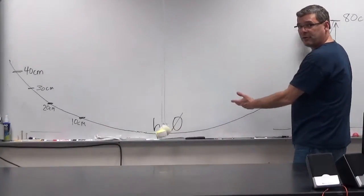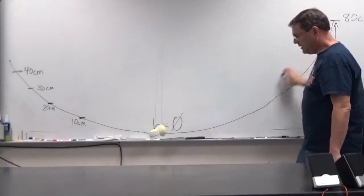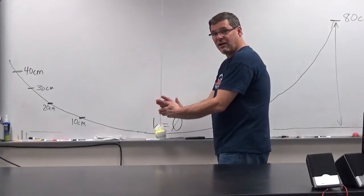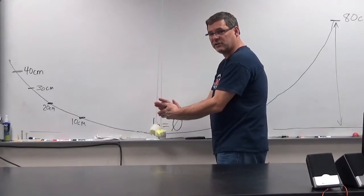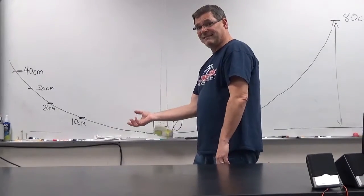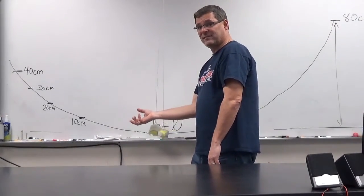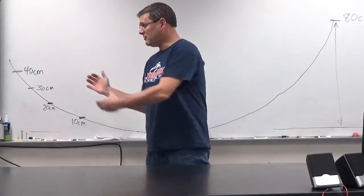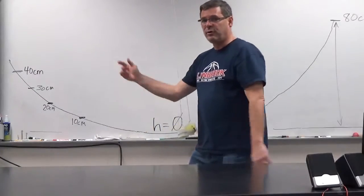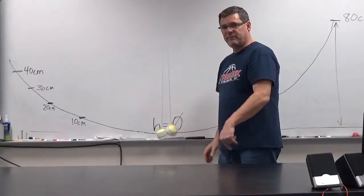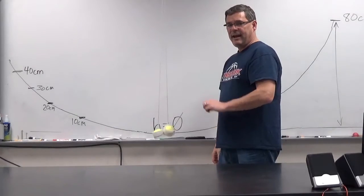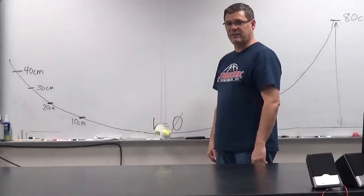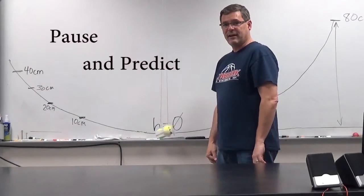The first part is the transfer of Robin Hood's potential energy to kinetic energy. Then the second part is the collision, the conservation of momentum during the collision. And then the third part, the velocity after the collision translates to a kinetic energy, which will then change to potential energy as the two rise together to a new final height. Pause the video here and try and figure it out, and then come back and see if you're right. We'll perform the experiment, and you can see if you correctly predicted the final height.